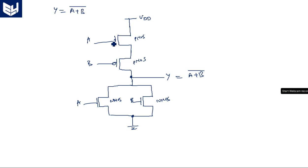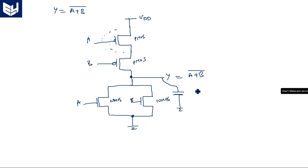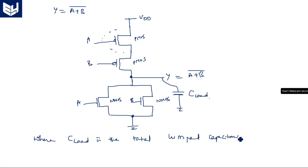To analyze this circuit in terms of parasitic extraction: a capacitance exists at each drain terminal, and additional capacitances arise from bulk regions. From the B terminal to its drain, and from the bulk potential to the output drain, and similarly for the NMOS transistors. All these parasitic capacitors are lumped together into a single load capacitance C_load, connected between the output and ground. C_load represents the total lumped capacitance of all parasitic capacitors present in the circuit.